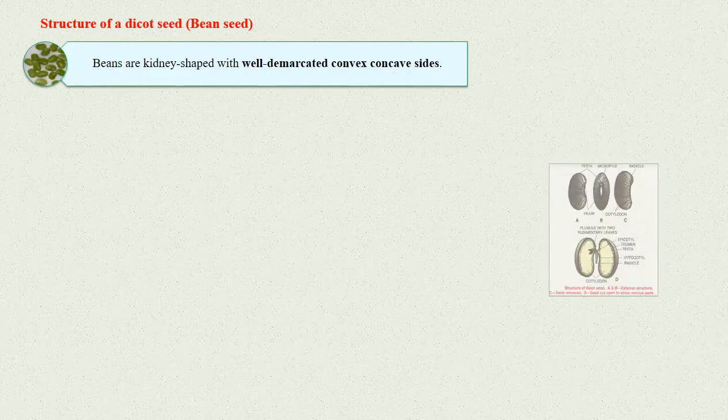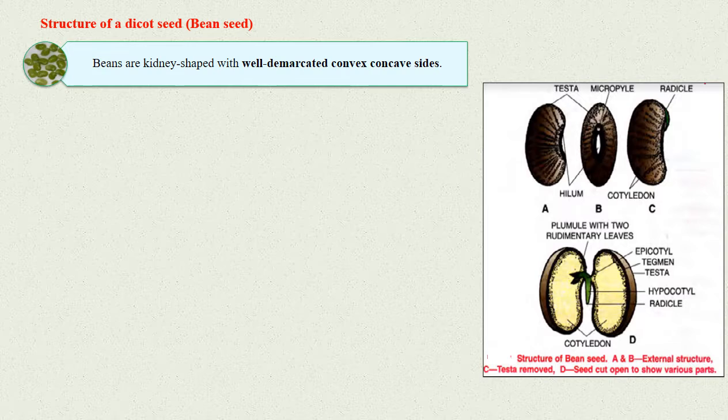Structure of a dicot seed - Bean seed: The structure of a dicot seed can be studied by taking an example of a bean seed. Beans are kidney-shaped with well-demarcated convex and concave sides.